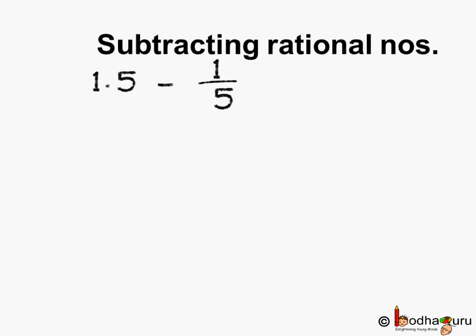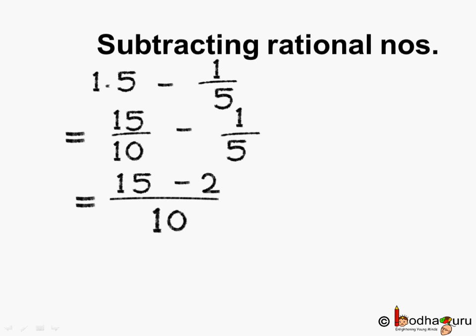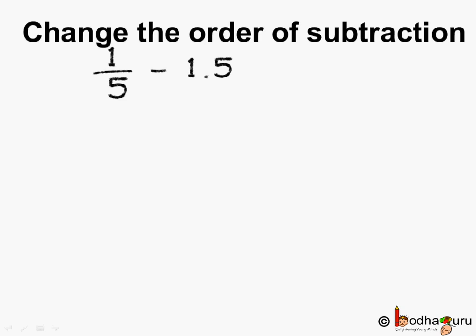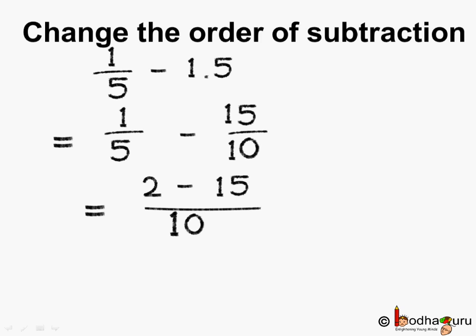Now let us subtract rational numbers and see. Here we have 1.5 minus 1 by 5. Now 1.5 can be written as 15 by 10 minus 1 by 5. Taking LCM of 10 and 5, which is 10, we get 15 minus 2 equals 13, so the answer is 13 by 10. Now let us change the order: 1 by 5 minus 1.5, which becomes 1 by 5 minus 15 by 10. Taking LCM as 10, we get 2 minus 15, giving minus 13 by 10.